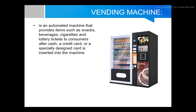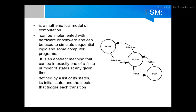The vending machine we are building accepts coin values of 5 cents, 10 cents, and 15 cents. When you insert 5 cents or 10 cents you get a drink, and when you insert 15 cents you get a newspaper. We use an FSM — Finite State Machine — to implement this vending machine.